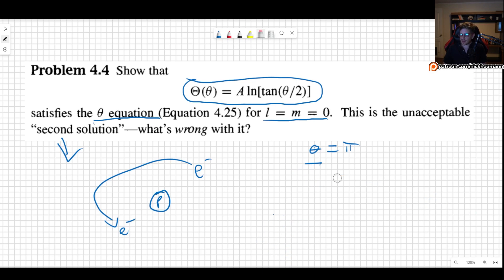So there's another possibility, which would be theta equal to zero. What happens in this case? Because in that case, our function is going to be a natural log of the tangent of zero, which is zero. But the natural log at zero goes to minus infinity. So it blows up again. So there's actually two points where the solution blows up. Theta equals zero and equal to pi.